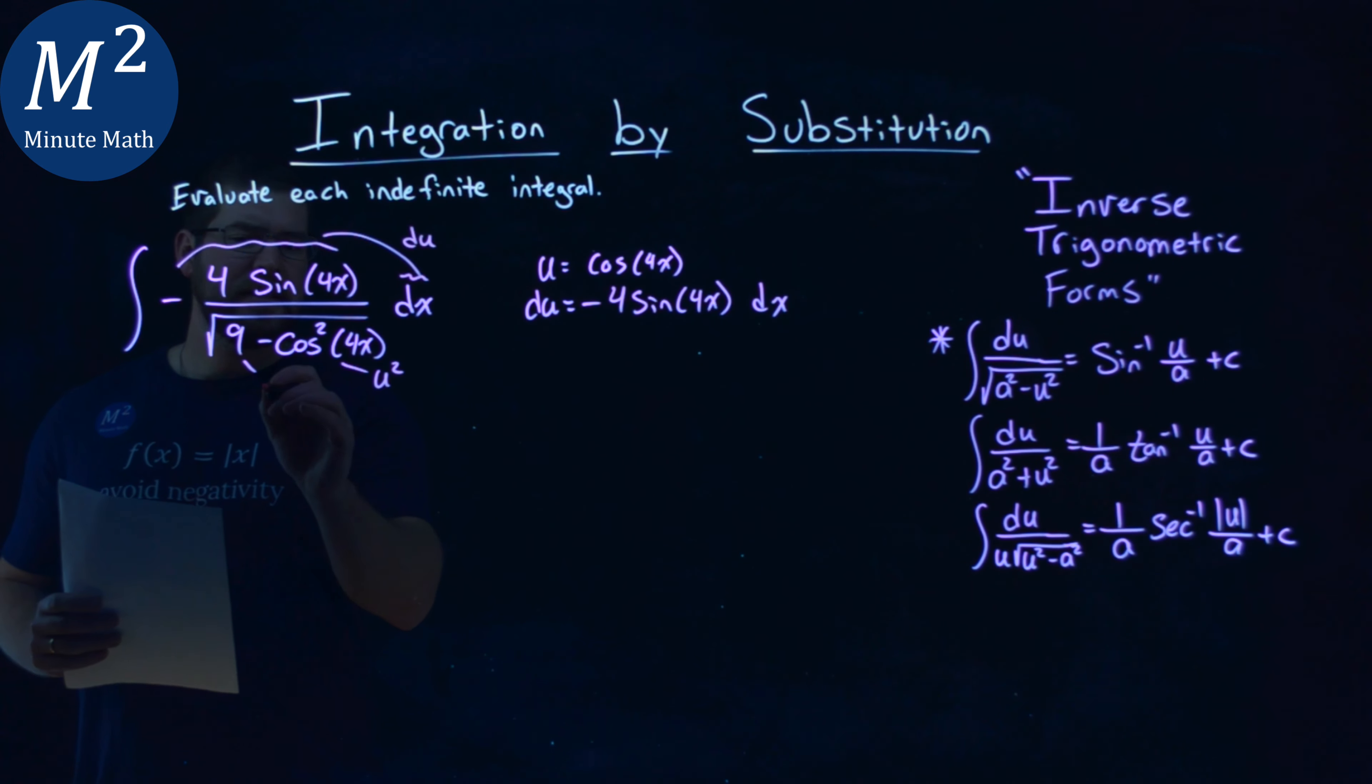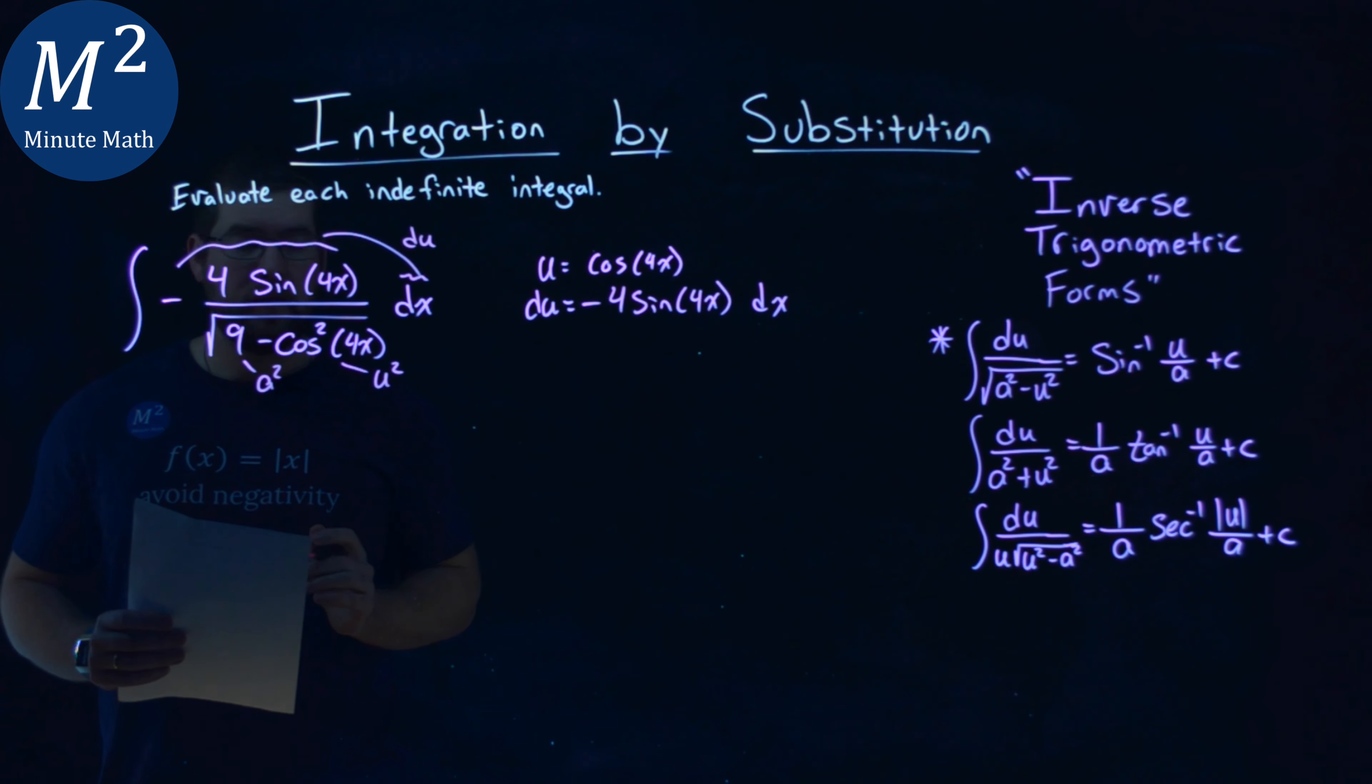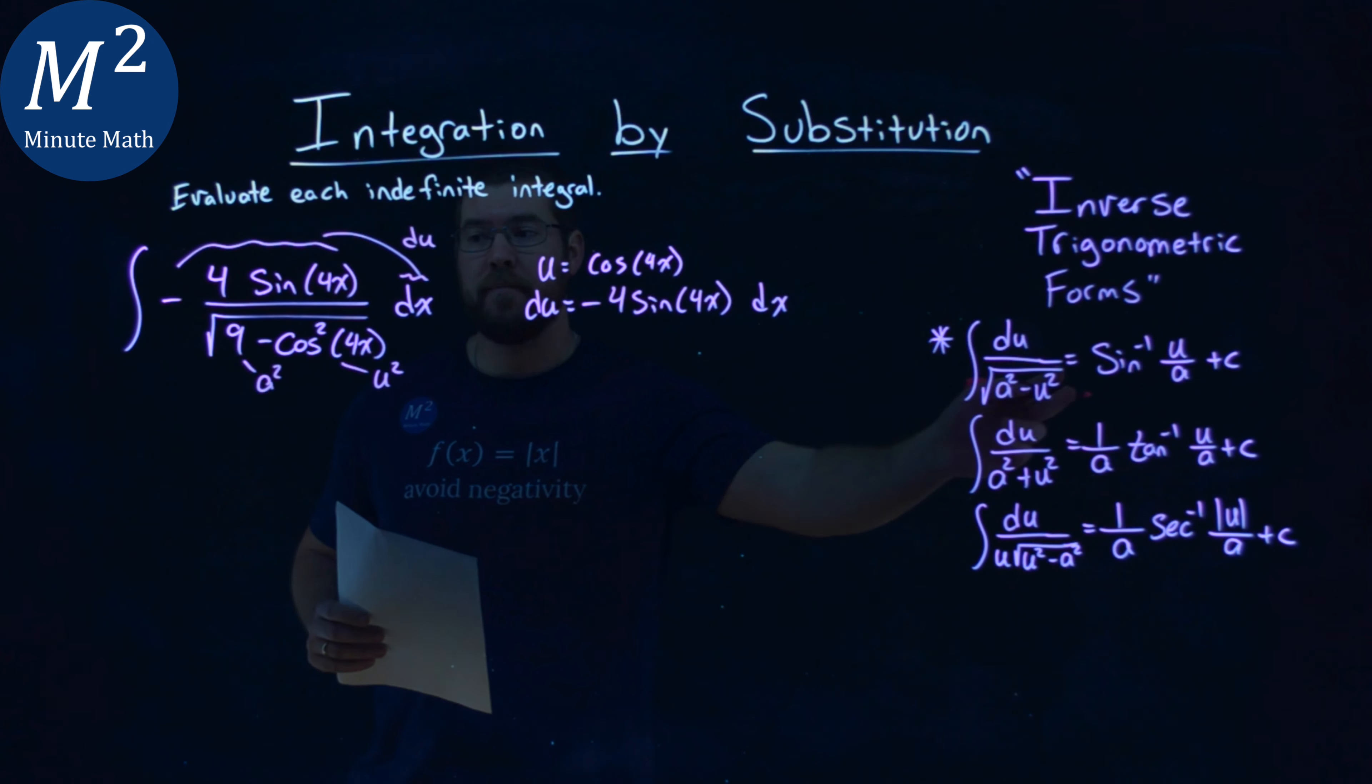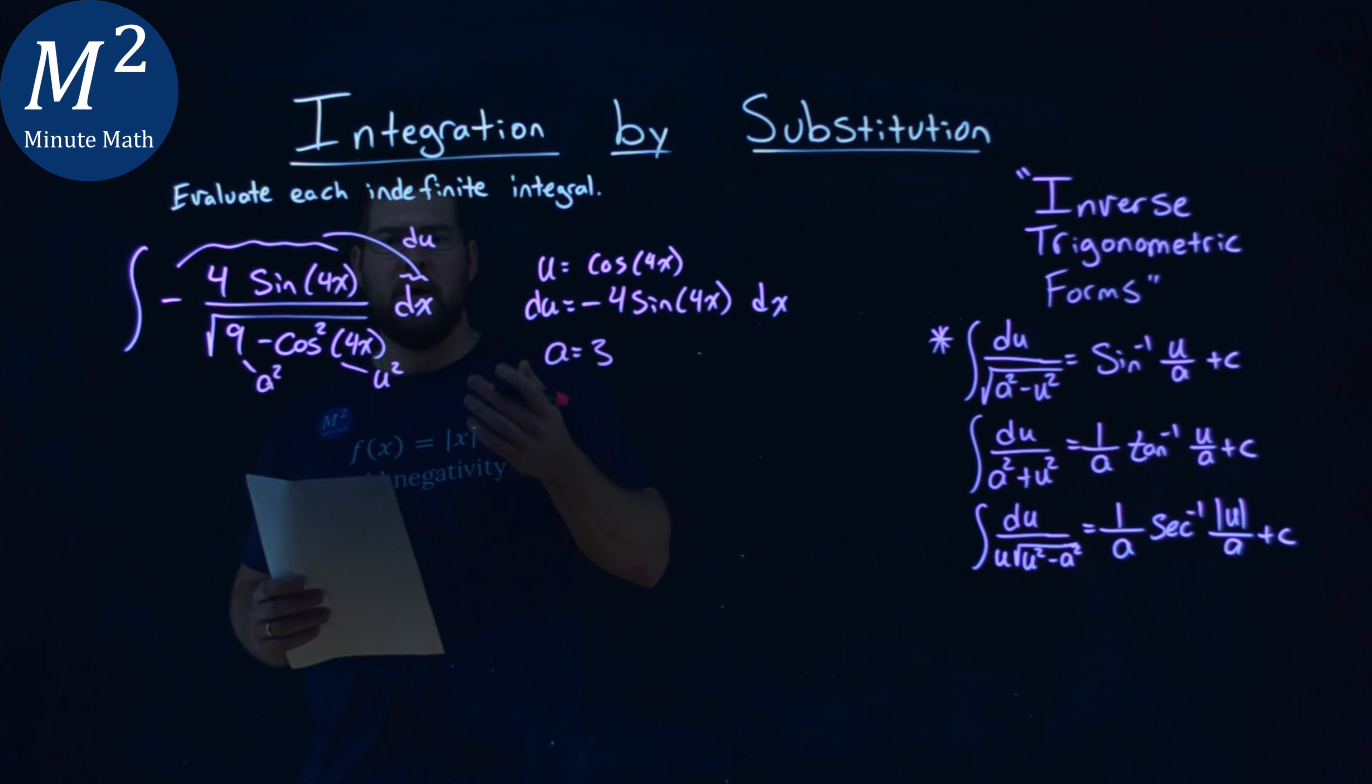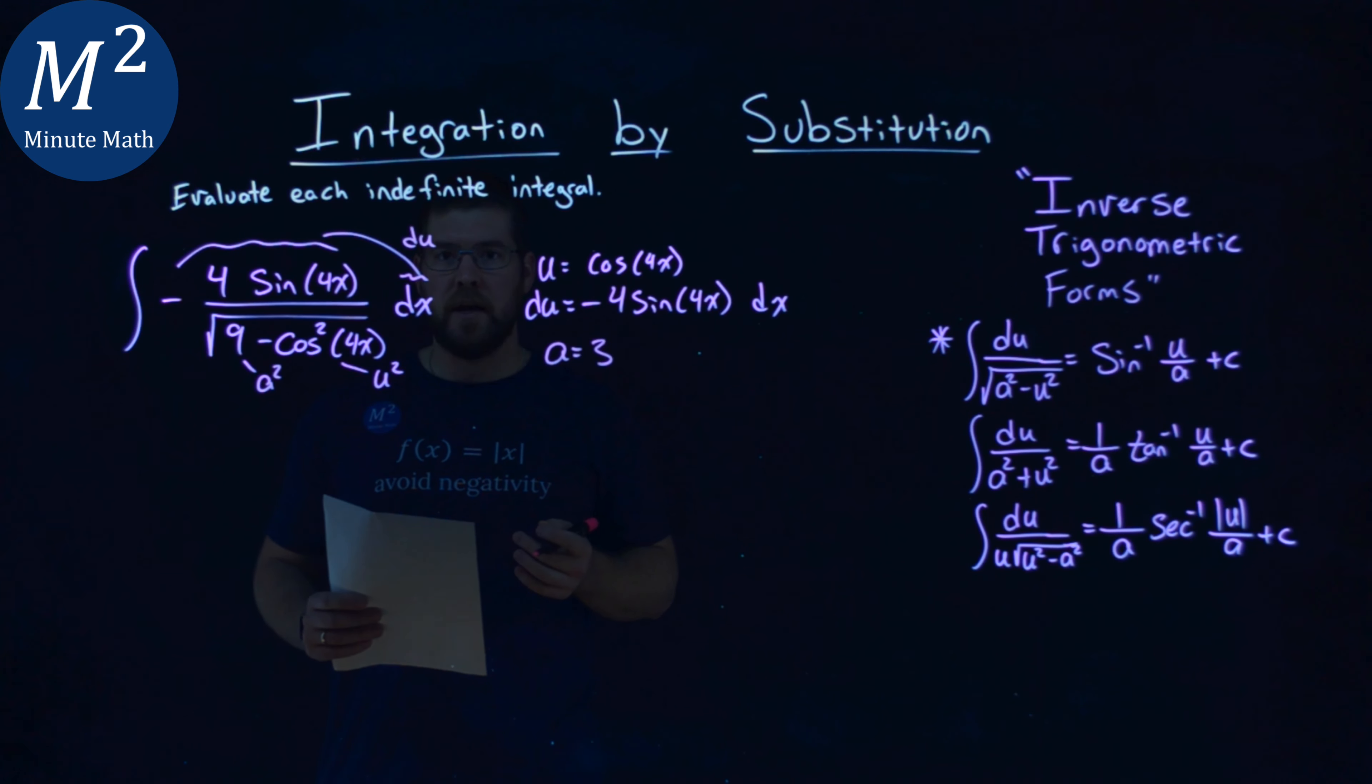The 9 here needs to be my a-squared value to line up perfectly with the arc sine form. So if 9 is a-squared, a is just equal to 3. 3-squared is 9, and we have this all lined up pretty nicely.